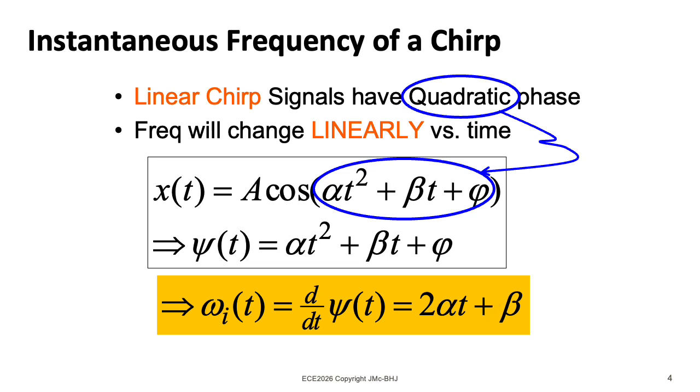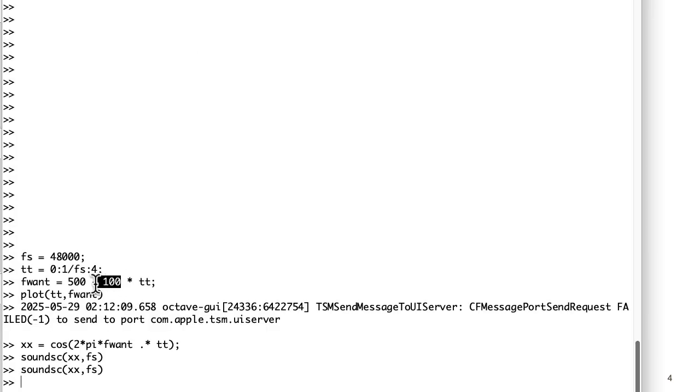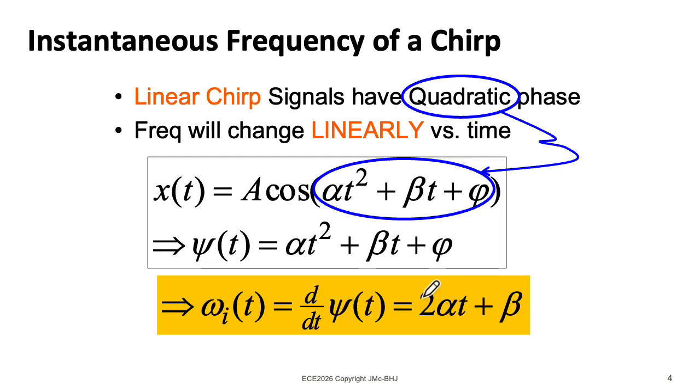And this explains the weirdness we found earlier in the MATLAB slash octave example, where it sounded like the frequency went down and went back up. If I factor out a t from these first two terms and match things up, this minus 100 is like alpha, and this 500 is like beta.